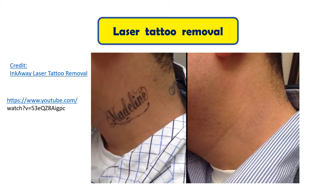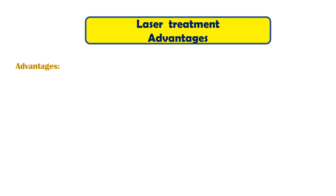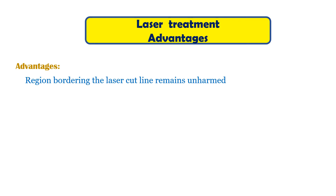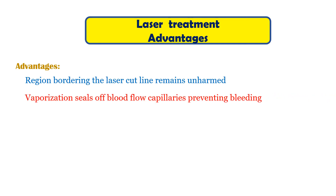Now let's learn about both the disadvantages and advantages of using laser for skin treatment. Starting with the advantages: while using laser in treating the skin, the surgeon directs a fine laser beam to the affected region and runs it along an intended path. As the beam follows the path, a thin line of tissues get vaporized, which results in a cut. The unique advantage is that the region bordering the cut remains unharmed since biological cells are poor conductors of heat. The vaporization automatically seals off most capillaries, thus preventing bleeding. Capillaries are blood vessels smaller than half a millimeter in diameter. But the larger blood vessels that may bleed are to be attended to as in normal surgery. The laser surgery is absolutely sterile and hence secondary infections are just not there.